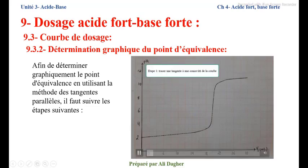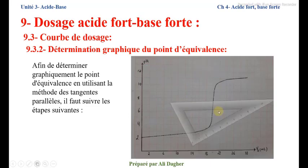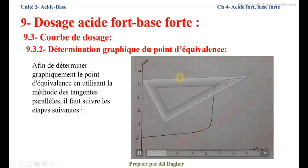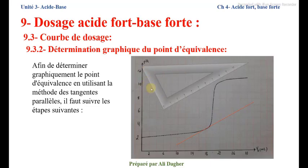Sur la courbe du dosage — on applique cette méthode sur la courbe du dosage d'un acide fort par une base forte. Étape 1 : tracer une tangente à une concavité de la courbe. On trace la tangente sur la concavité de la courbe.